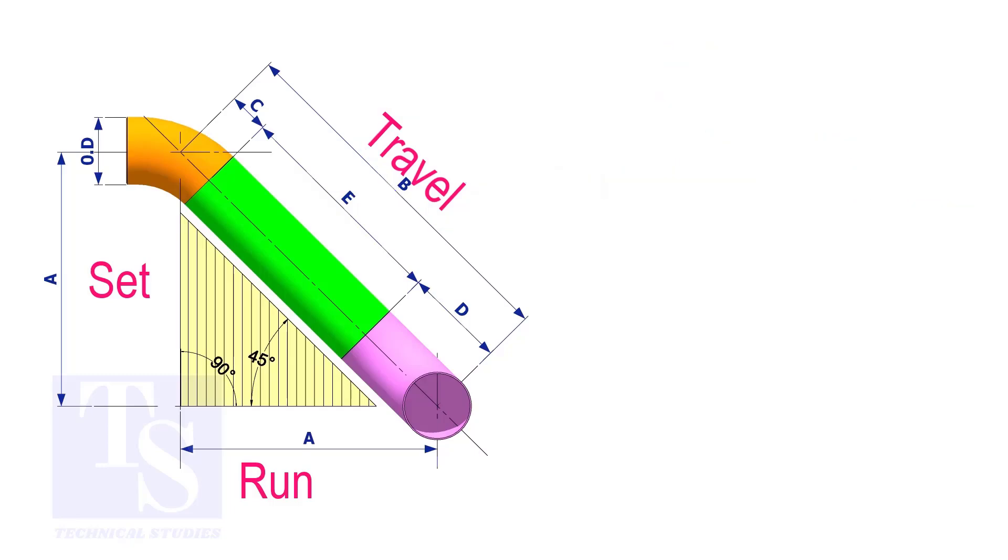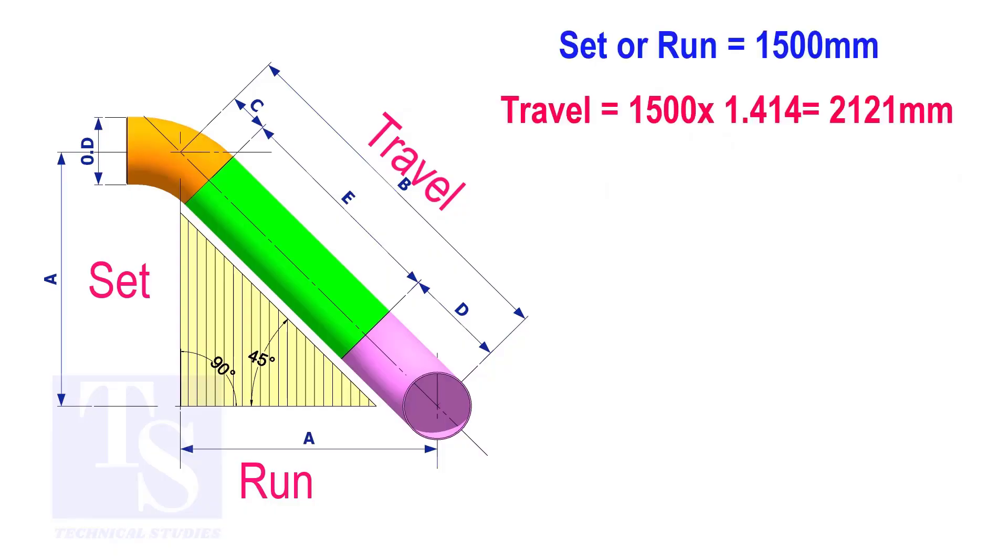Try another example. Suppose the value of the set or the run is 1500 millimeters. The value of the travel will be 1500 multiplied by 1.414 equals 2121 millimeters.